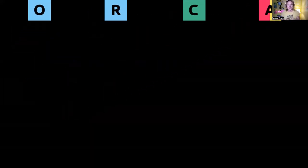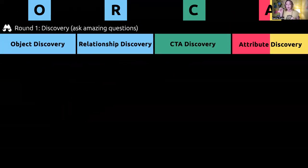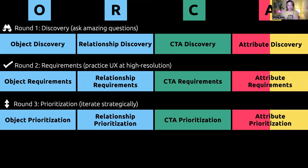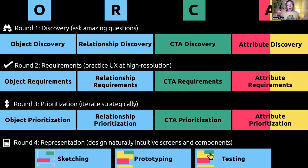The ORCA process is robust — four rounds. In the first round we hit all four pillars and go through discovery: what are the objects, how do they connect, what do people do to them, and what are the attributes? Then we go into requirements where we really dig in through those four pillars again, then prioritization of the O's, R's, C's, and A's, and finally pull it all into low-fidelity screens to hand off to higher-fidelity design, UI, task flows, and interaction design.